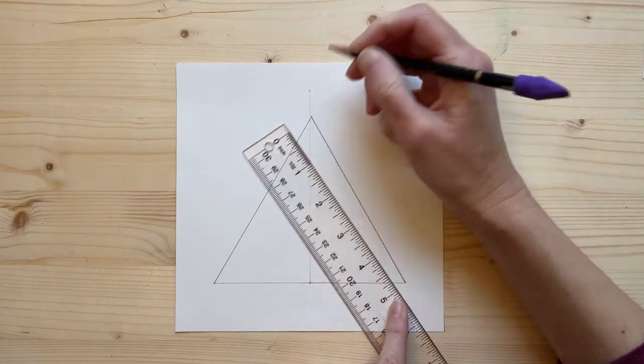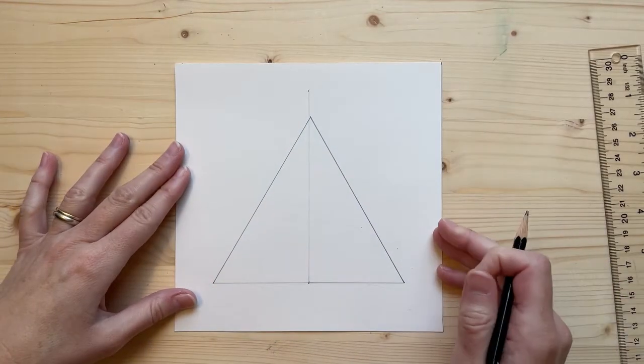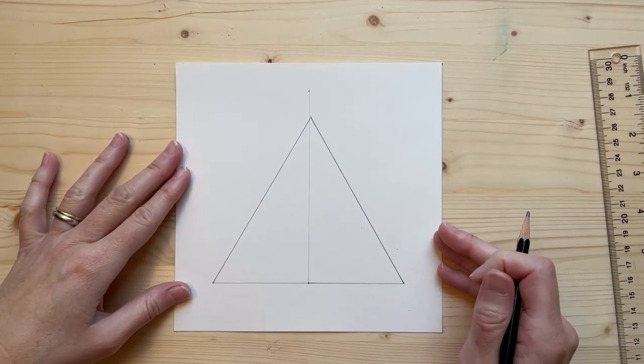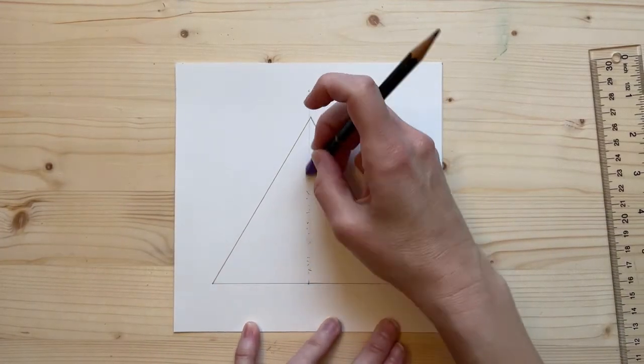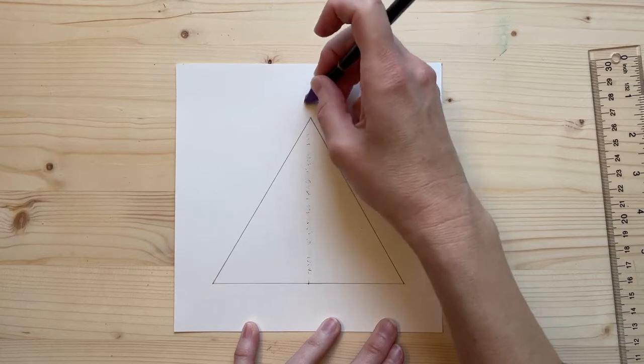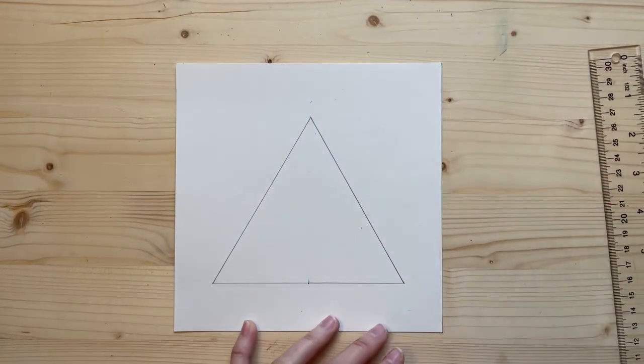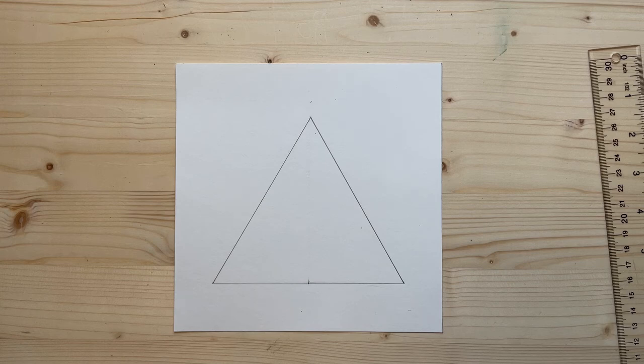So there is a five-inch equilateral triangle. You can now erase that center line, and there is an equilateral triangle without using a compass.